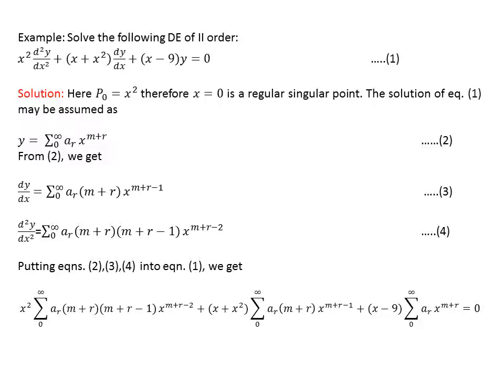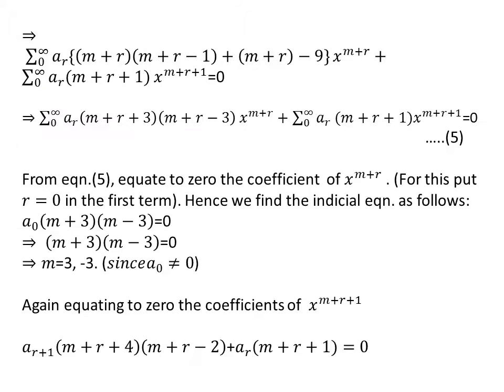We can assume the solution as equation two. We differentiate it and get dy by dx, again differentiate get d2y by dx square. We put second, third and fourth equations into first and we get the following equation. After simplification of the previous equation, we will get equation five.